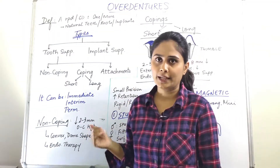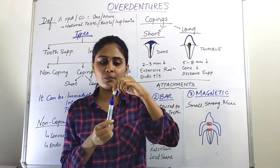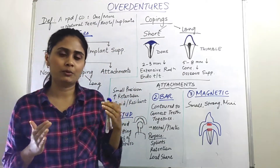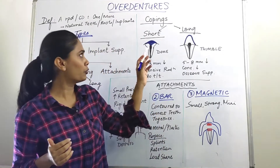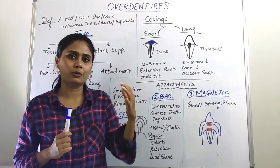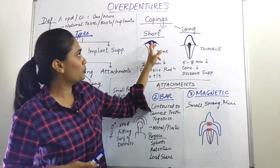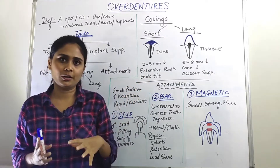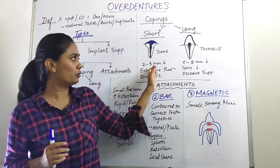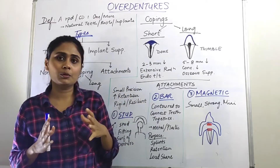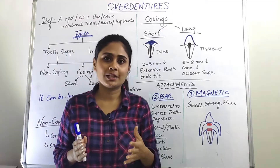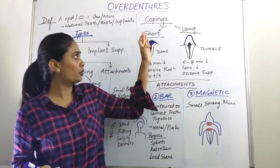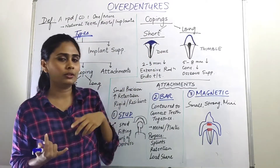Moving on to the coping type — coping is like a covering, similar to the cap of a pen. Coping is of two types: short and long. In the short coping type, we get a dome shape or convex structure — the blue part I have drawn here is the coping, which can be metal or any other material. There will be a two to three mm reduction, known as extensive reduction, requiring endodontic treatment. A dome-shaped coping is known as short coping, and endodontic treatment is mandatory.